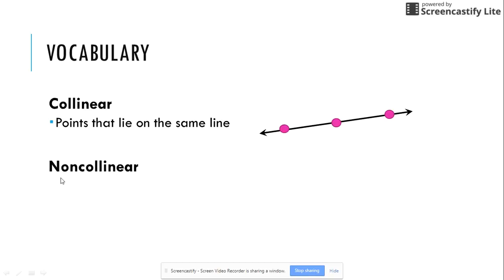Non-collinear would mean not collinear or not on the same line. Points that do not lie on the same line. Here I have three points. I can connect any two of them to make one line. But I cannot connect the three points to make a straight line. I would end up with three separate lines.